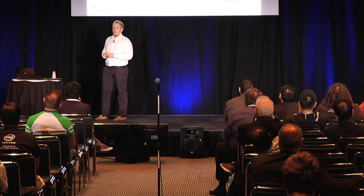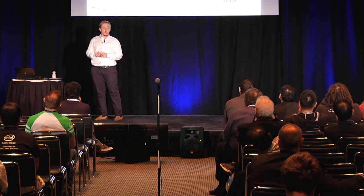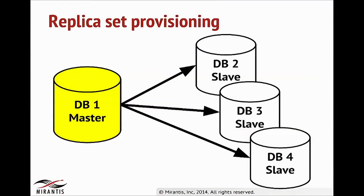The last use case defined for read replicas is provisioning of a new replication set from scratch. The user asks Trove to build a new replication set containing a certain number of instances, and at the end will receive a replication set with one master and the remaining provisioned nodes as slaves.